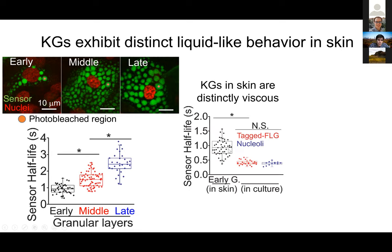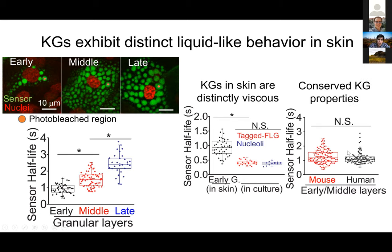We said, well, maybe it's because we were working with human filaggrin before. So we did these experiments with human cells as well — using a process of building skin in the lab. When we repeat the experiments both in mouse skin and human skin reconstructed in the lab, we see very, very similar behaviors. The viscosity of these keratohyalin granules is very much optimized for biological function in the context of the tissue.